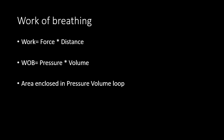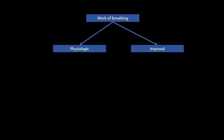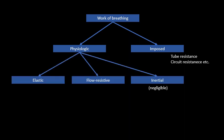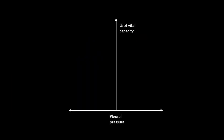Work of breathing is largely physiologic and imposed. Imposed is the additional load imposed on the muscles by the ventilator circuit and endotracheal tube resistance. Physiologic work of breathing is largely against the elastic properties of the tissues—the lungs and chest wall—and the resistance of the airway.